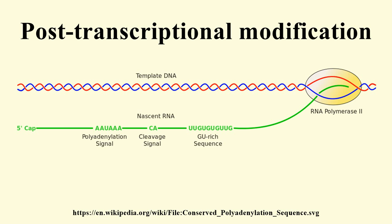These modifications are 5' capping, 3' polyadenylation, and RNA splicing, which occur in the cell nucleus before the RNA is translated.